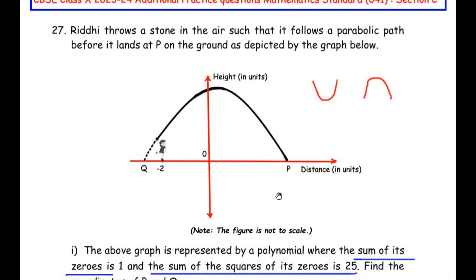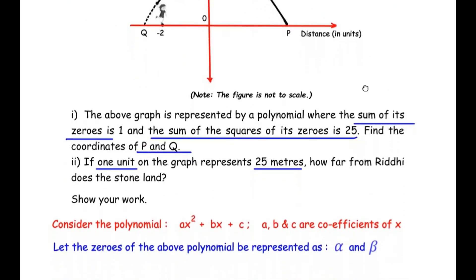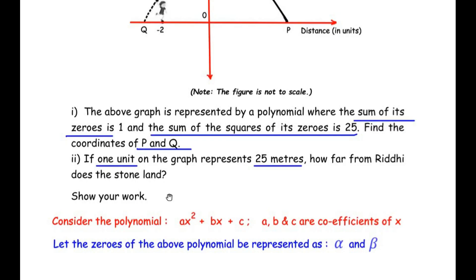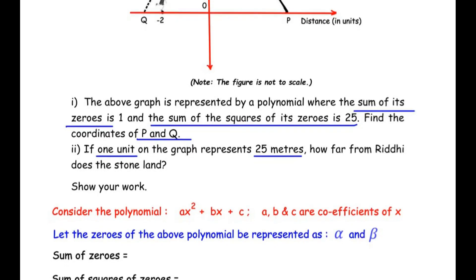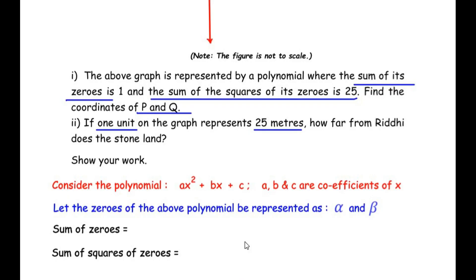Let us write down the general form of the quadratic polynomial. Consider the polynomial — since it is quadratic, it is written as ax² + bx + c, where a, b, and c are coefficients. Since it is quadratic, we have two zeros represented as alpha and beta. Now we write the sum of zeros: alpha + beta, which is given as 1. Let us call this equation 1.